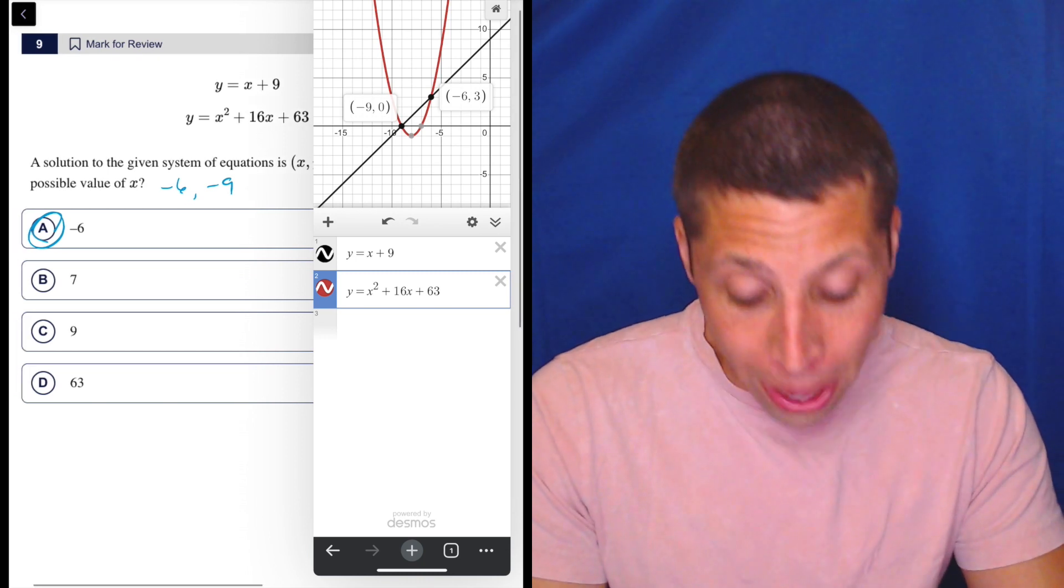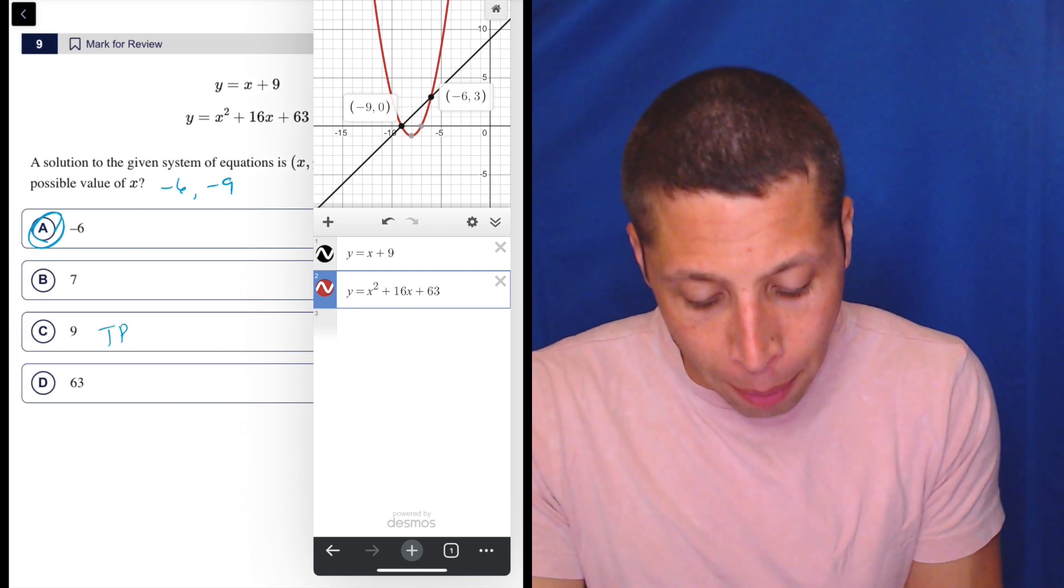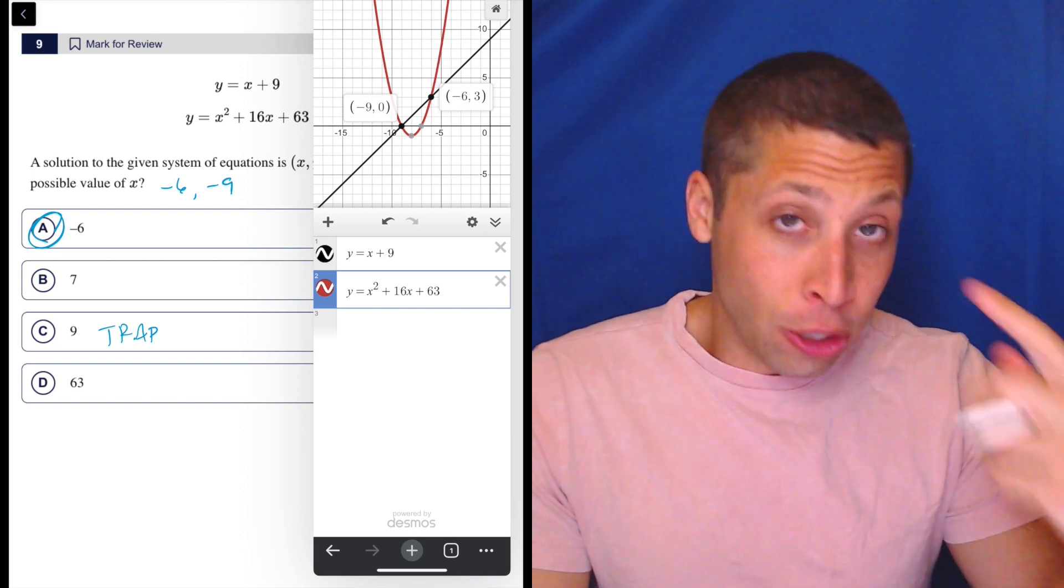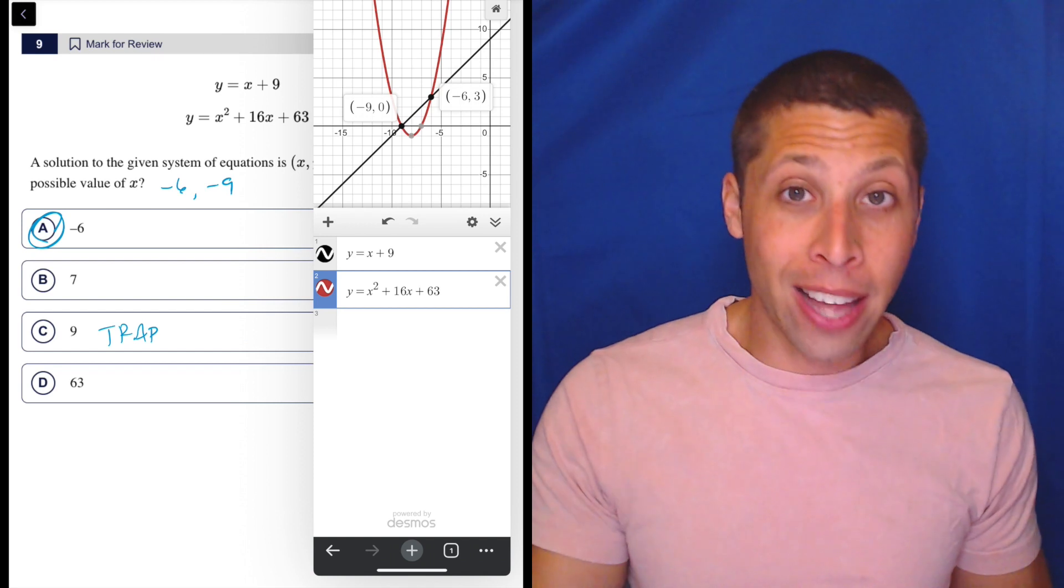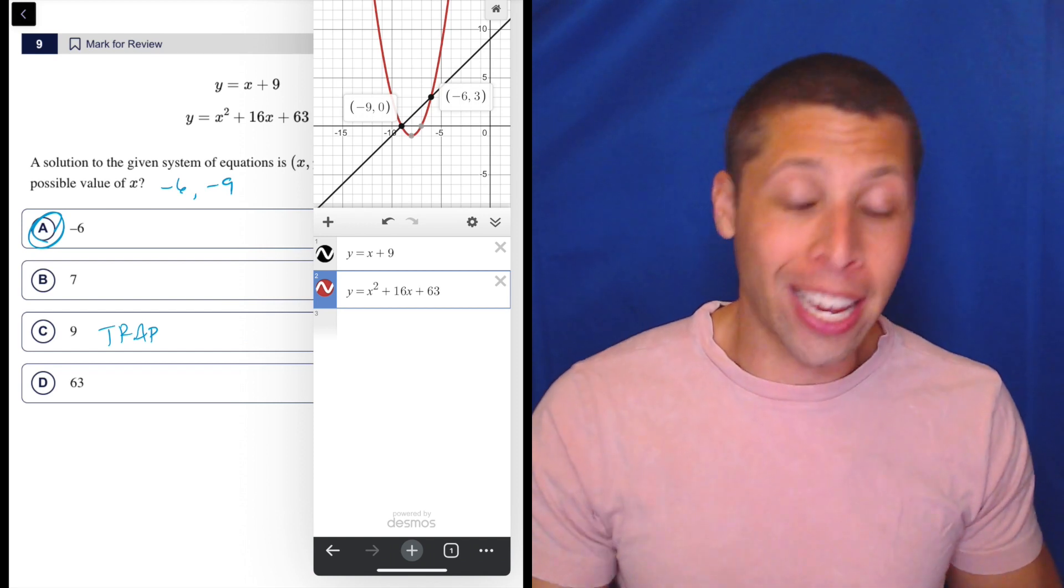Now, I know what they're doing, though. They are hoping that you fall for this trap. I'm not going to do the algebra, but if we were to do it, we would have to merge these two equations together, then get it equal to zero, because it's a quadratic, and then factor.